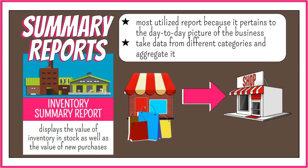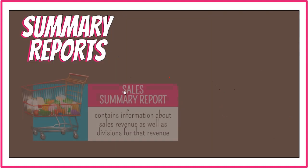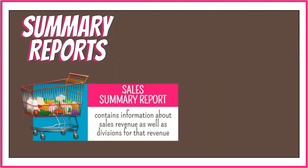Another example: a shortage of stock can be determined during a peak season at a particular location, enabling better anticipation of peak sales. Another example is a sales summary report, which contains information about sales revenue as well as the divisions for that revenue in terms of geographic allocation and product category.